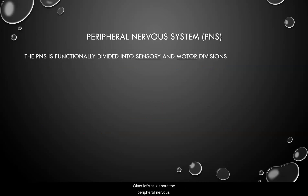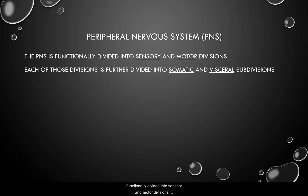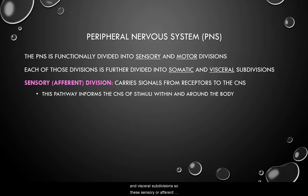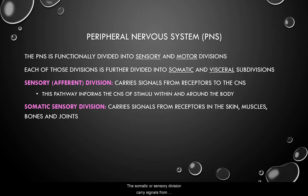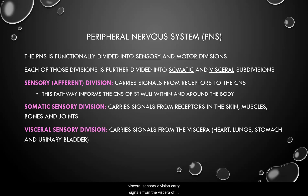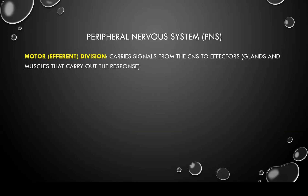The peripheral nervous system is functionally divided into sensory and motor divisions, each further divided into somatic and visceral subdivisions. The sensory, or afferent, division carries signals from receptors to the central nervous system, informing it of stimuli within the body and in the environment. The somatic sensory division carries signals from receptors in the skin, muscles, bones, and joints. The visceral sensory division carries signals from the viscera — the heart, lungs, stomach, and urinary bladder. The motor, or efferent, division carries signals from the central nervous system to the effectors — the glands and muscles that carry out the response.